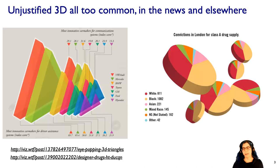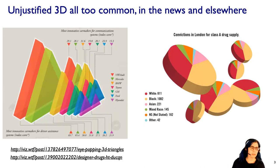Let's start with 3D. Unjustified 3D is a very common problem — not just in the news, but elsewhere. People seem to have the idea that if two dimensions are good, three dimensions must be better. That's in general a very dangerous position to take. Here are a couple of great examples from 'WTF Visualizations,' which is a great site for dubious visualization examples.